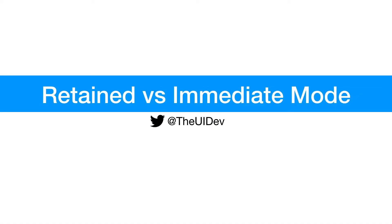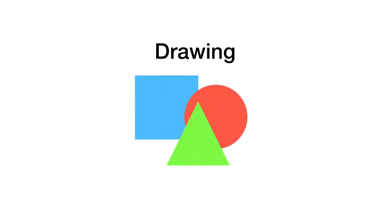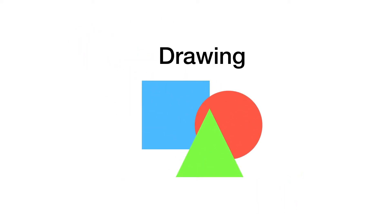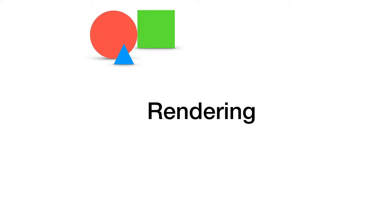Retained vs. Immediate mode. In the lesson on the event loop, we saw how drawing and events were the two most important operations of any UI toolkit. In this lesson, we'll focus a little more on the drawing side. Instead of calling it drawing, let's call it rendering, which is the act of drawing something onto the screen. This includes drawing 2D and 3D graphics.